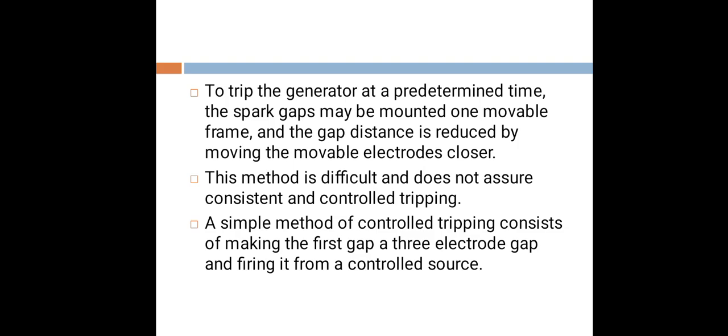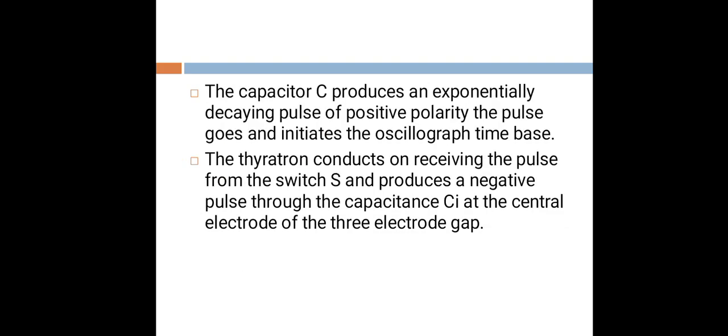A simple method of controlled tripping consists of making the first gap a three-electrode gap and firing it from a controlled source. The capacitor C produces an exponentially decaying pulse of positive polarity.